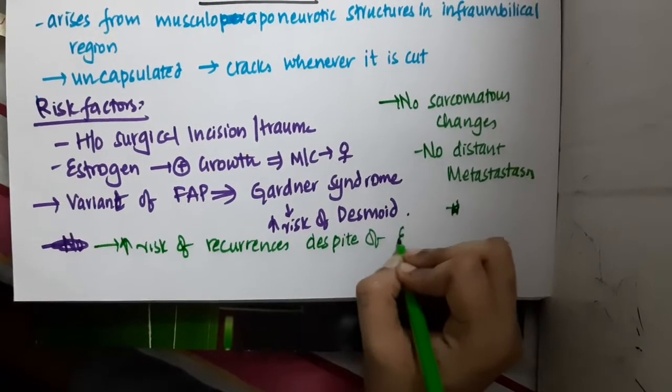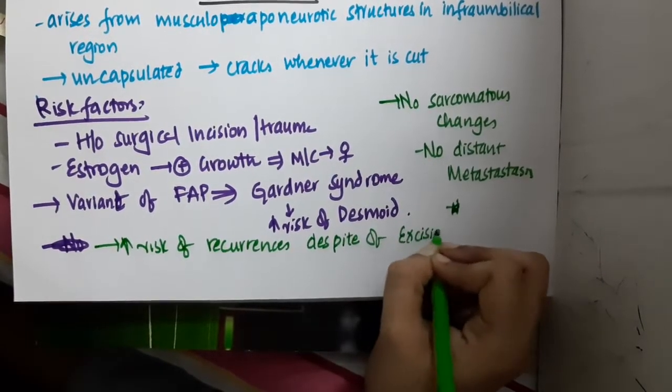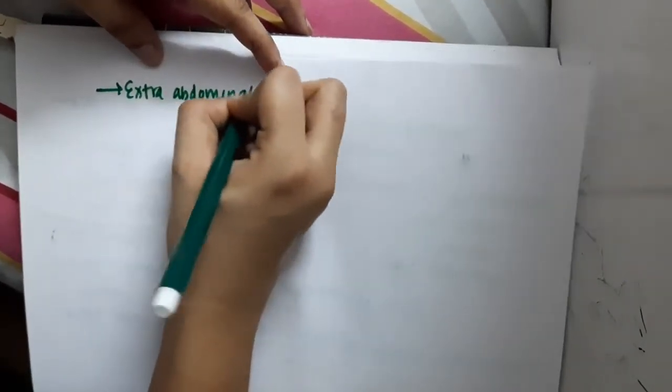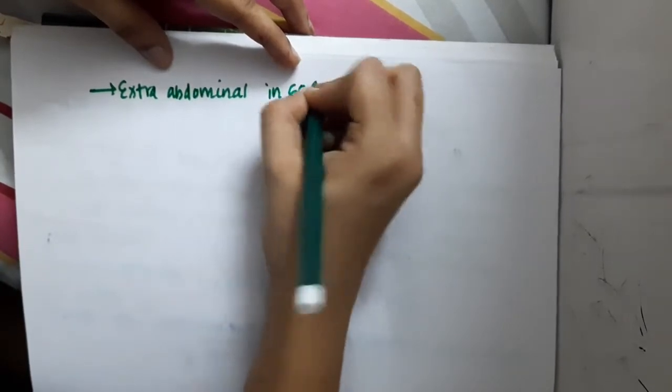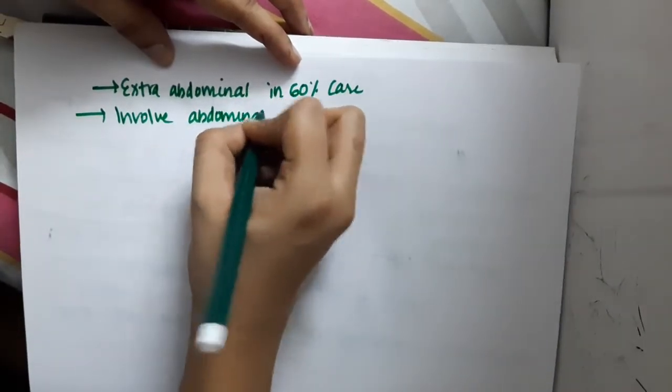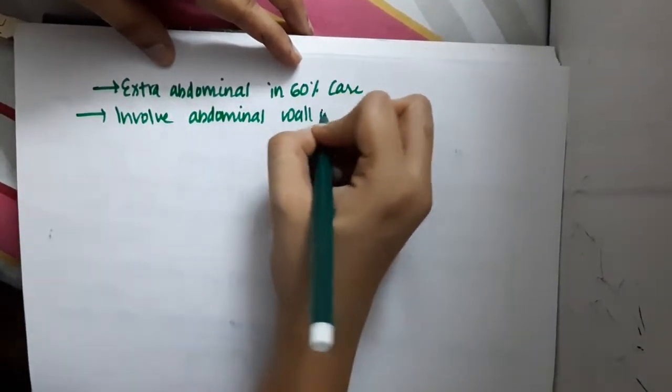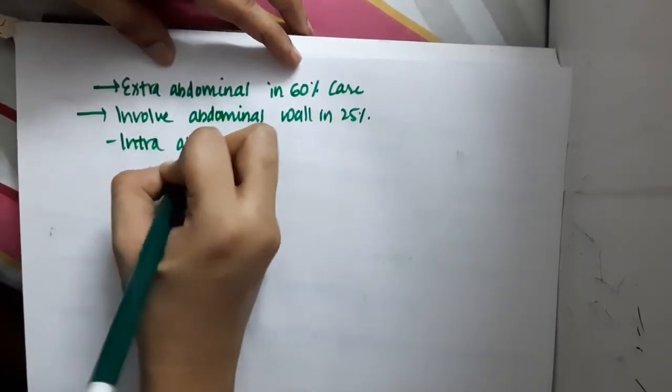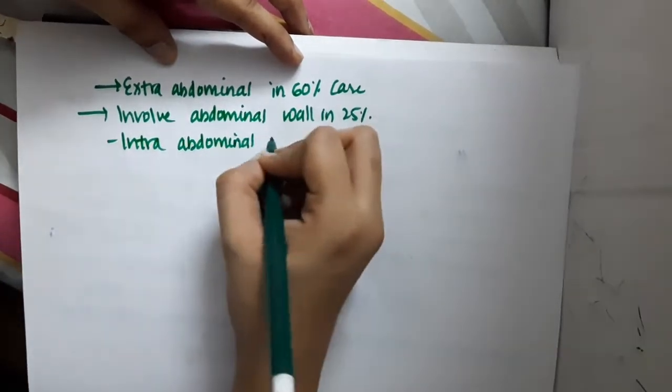Even after excision, this tumor recurs very fast. Now where is it distributed? This Desmoid tumor is present extra-abdominally outside the abdominal wall in 60% of cases. It will involve the abdominal wall in 25% of cases and is intra-abdominal in 15% of cases.